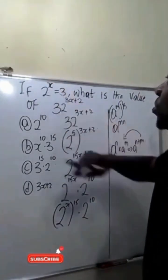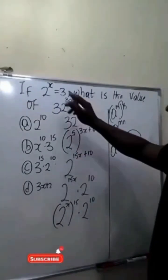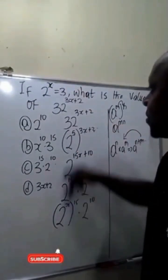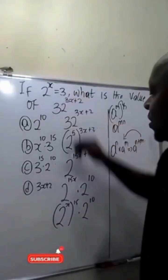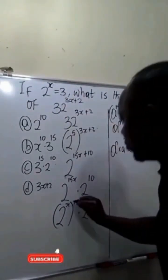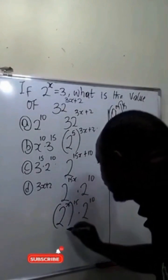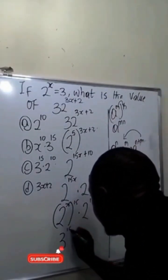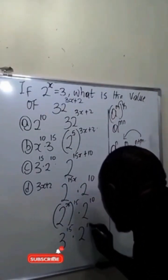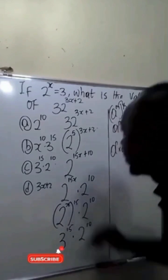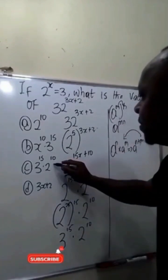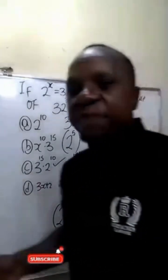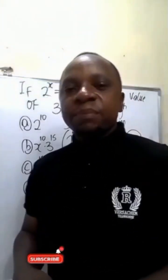From the question we are told that 2 raised to power x is equal to 3, so we're going to replace 2 raised to power x with 3. This will become 3 raised to power 15 dot 2 raised to power 10. Our answer is C.